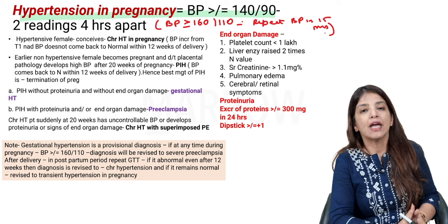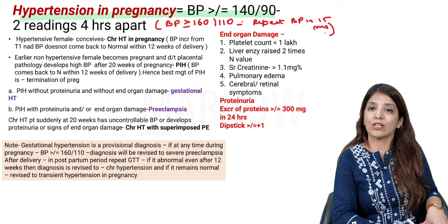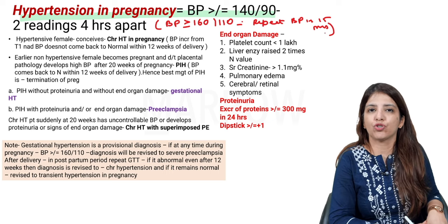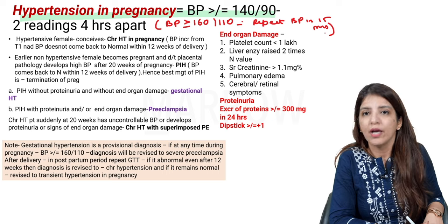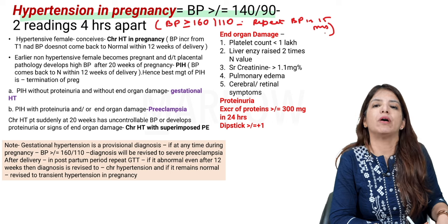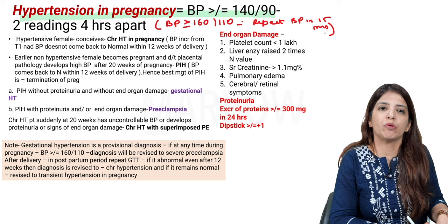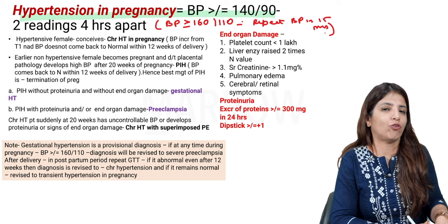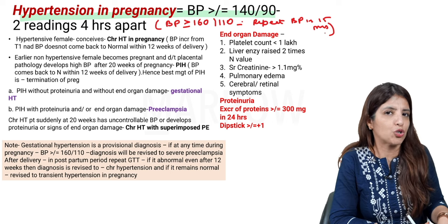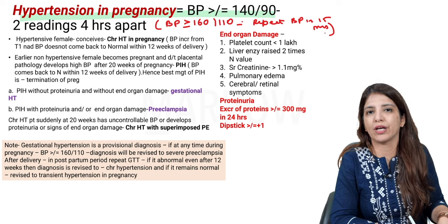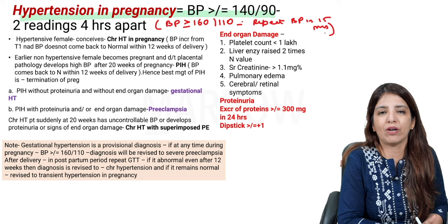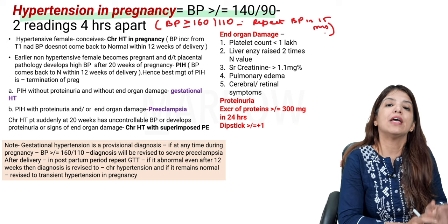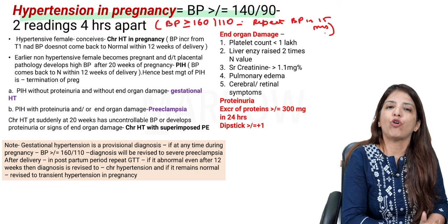A very common confusion is that both diastolic and systolic should be raised to call it hypertension — no. Either systolic should be more than or equal to 140, or diastolic should be more than or equal to 90, or both should be more than 140 by 90.